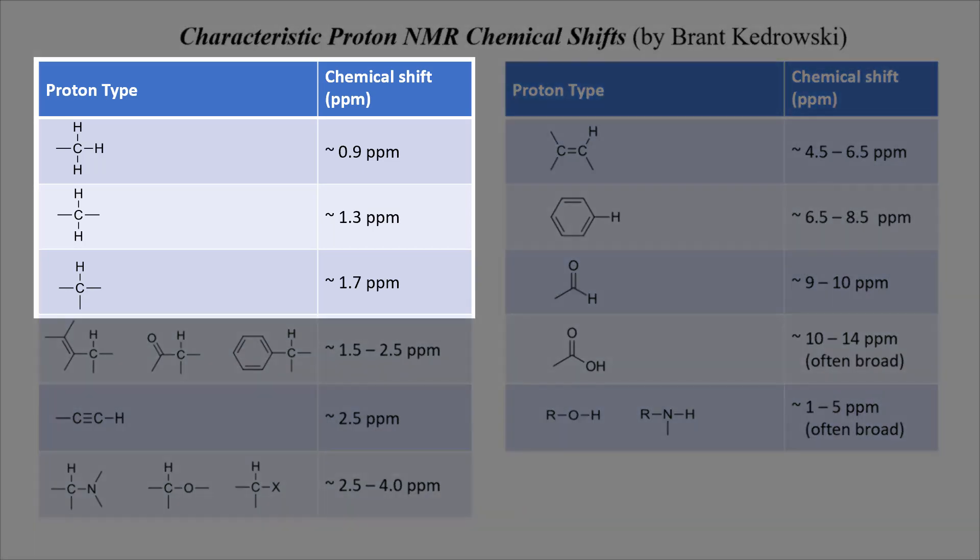The first three entries show the typical location of alkyl groups that aren't near any deshielding group. A deshielding group might be an electronegative element or a multiple bond. Isolated alkyl groups tend to show up in this region. Methyls tend to show up at 0.9 parts per million, CH2 groups at 1.3 parts per million, and methine-type protons, CHs, at about 1.7.